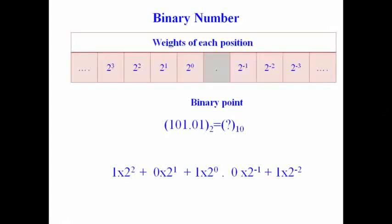Now for binary numbers, we look at the weight of each position. There is a binary point — in decimal numbers it's called a decimal point; in binary it's called a binary point. To the left of the binary point: 2 raised to the power 0, 2 raised to the power 1, 2 raised to the power 2, 2 raised to the power 3, 2 raised to the power 4, and so on. On the right side: 2 raised to the power minus 1, 2 raised to the power minus 2, 2 raised to the power minus 3, and so on.